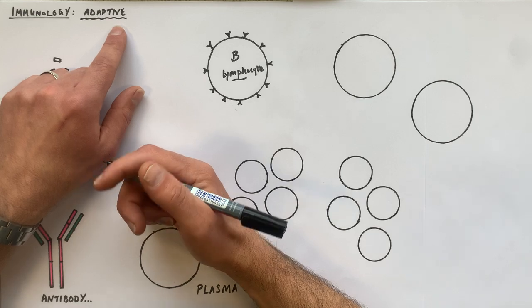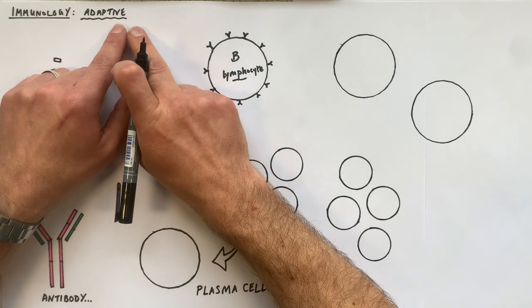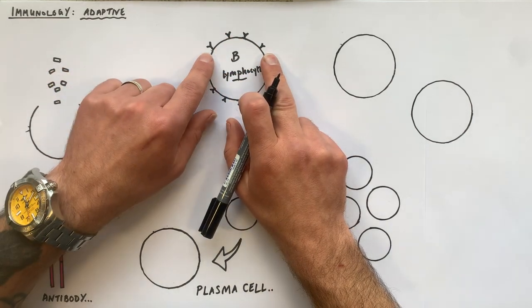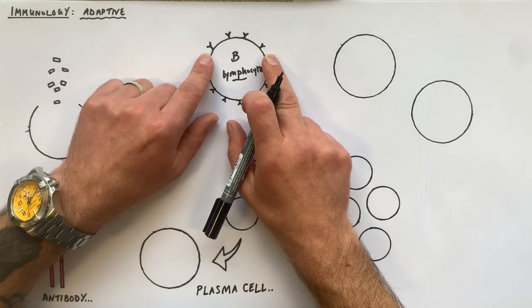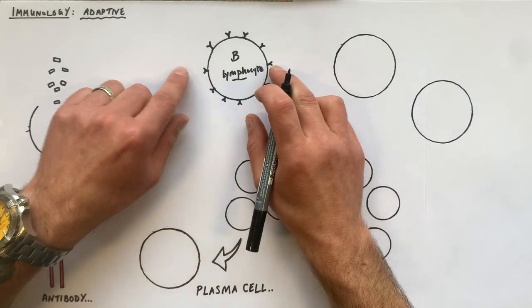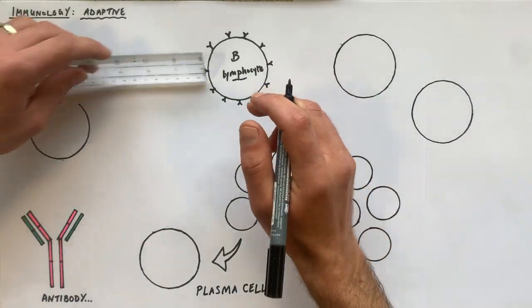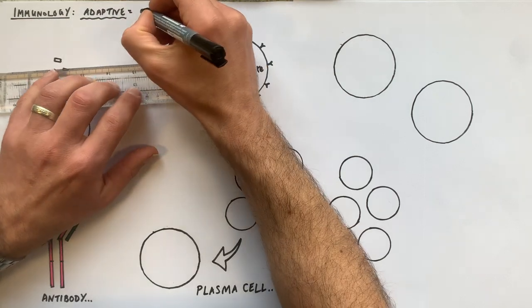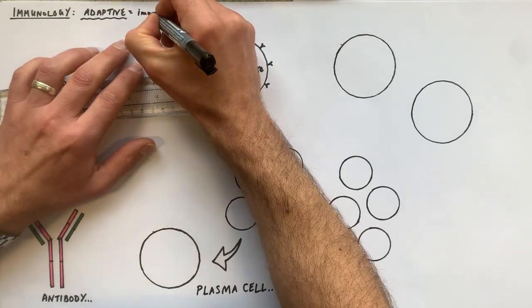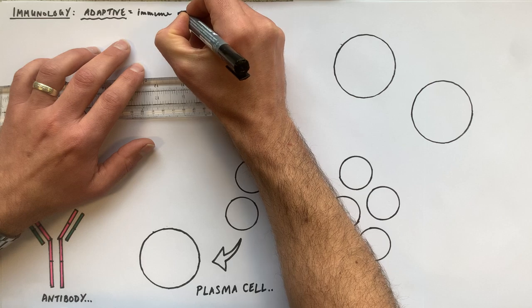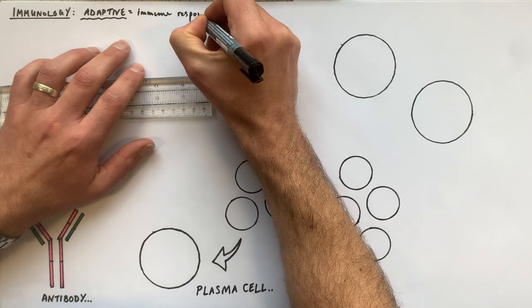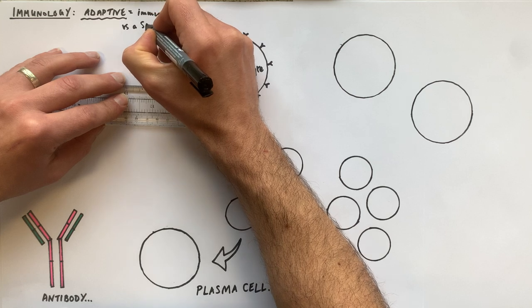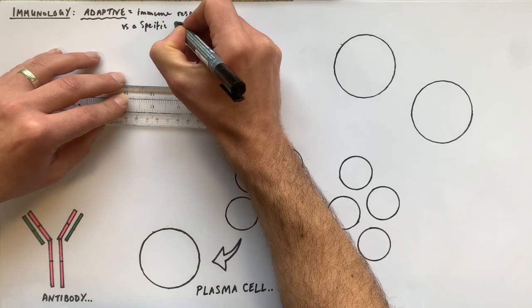This is going to be split into two main immune reactions: one is the humoral response and one is the cell-mediated response, and they both interlink as part of this adaptive immune response versus a specific antigen.